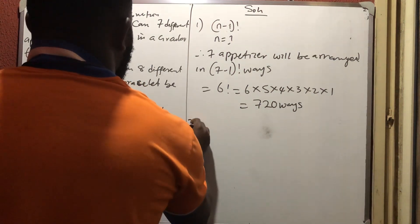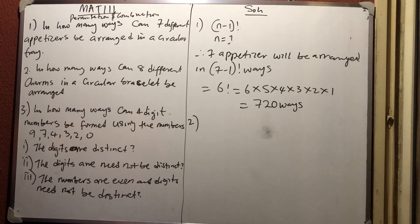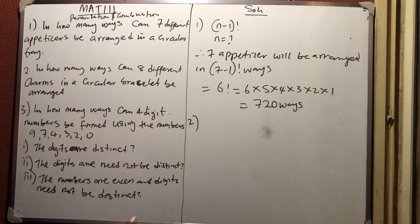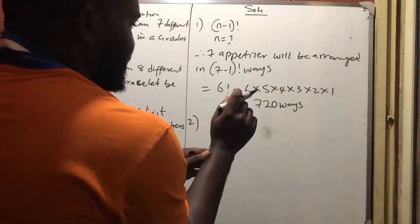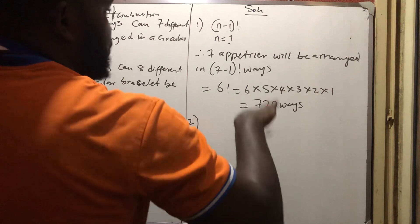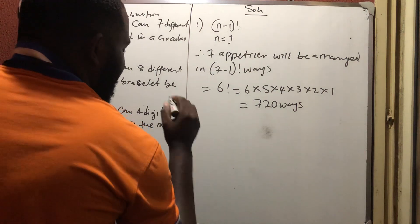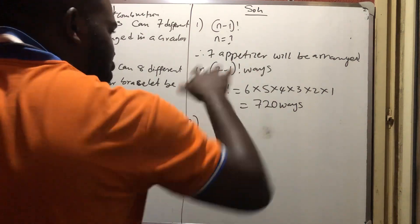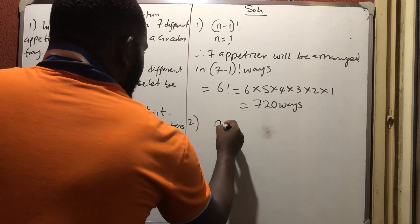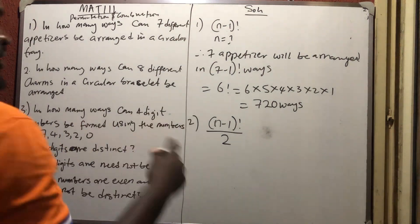Number two asks: in how many ways can eight different charms be arranged in a circular bracelet? A bracelet can be turned front and back, so since it can be flipped, the formula is (N-1)! divided by 2. This division by 2 accounts for the fact that you can turn it upside down.